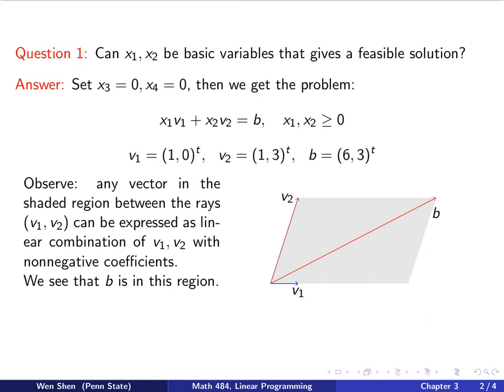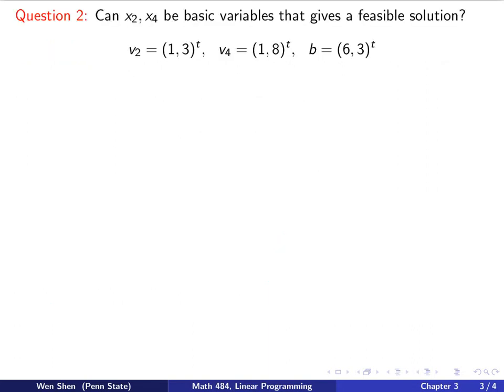All we need to check now is to see that if the b vector lies within this region. In this graph, it's quite clear that this b is in this shaded area. Therefore, we can find a positive x₁ and x₂ such that b is a linear combination like that. We can conclude now, x₁ and x₂ can be used as basic variables, which will give us a basic feasible solution.